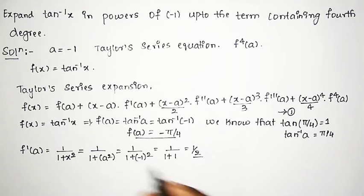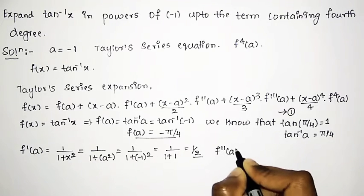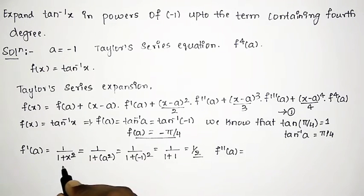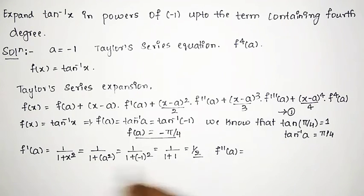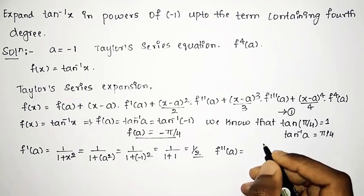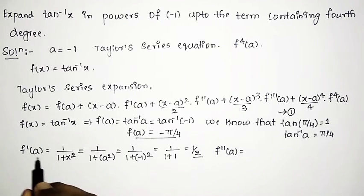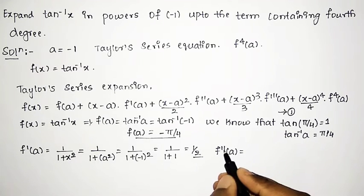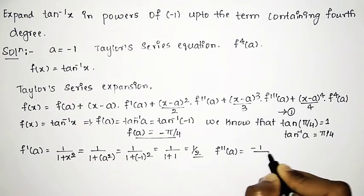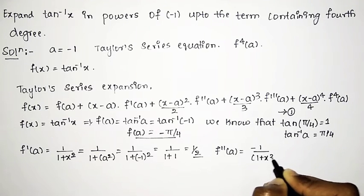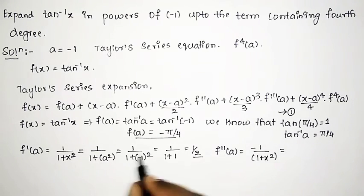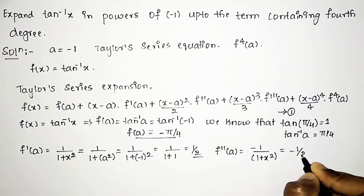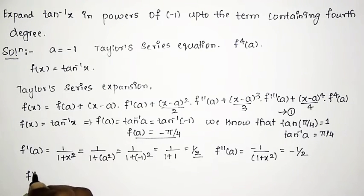Similarly, we find f''(a) by differentiating 1/(1 + x²). The second derivative gives minus 2x/(1 + x²)². Substituting a = minus 1, we get f''(a) = minus 1 divided by 2, so f''(a) = minus 1/2.